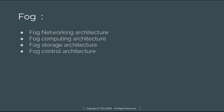All of these dimensions are possible because of fog. Basically, fog covers networking, computing, storage, and control. So we can have a fog computing architecture, fog networking architecture, storage architecture, and control architecture. There is a division between the data plane and control plane of the fog network, and it supports various 5G applications, IoT applications, and big data applications.